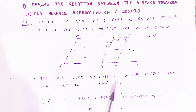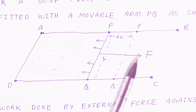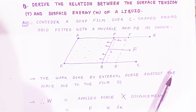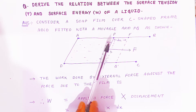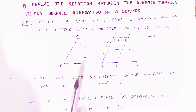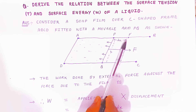Because of the film, there is a force of attraction shown by arrows. The work done by external force F against the film — the film will lose energy when work is done against it. Work done by external force against the soap film is capital W.